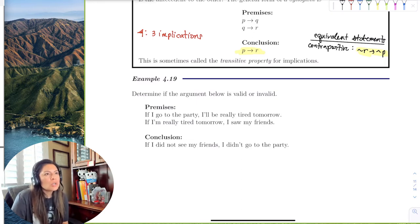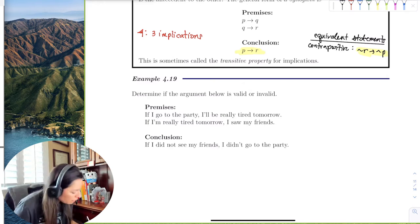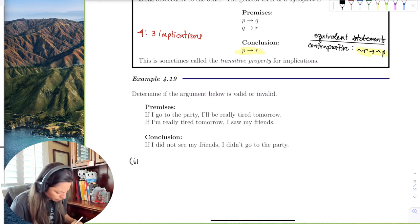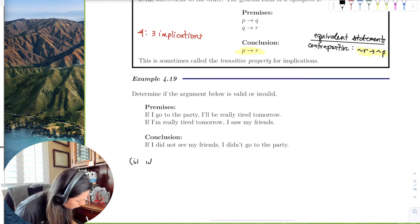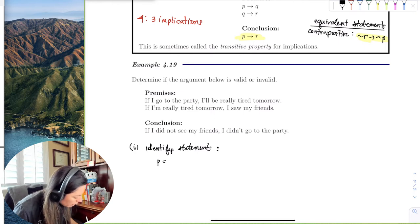Okay, so let's go ahead and try the syllogism. So the first thing we'll want to do is go ahead and identify the statements. Okay, so I'm going to say P is I go to the party.